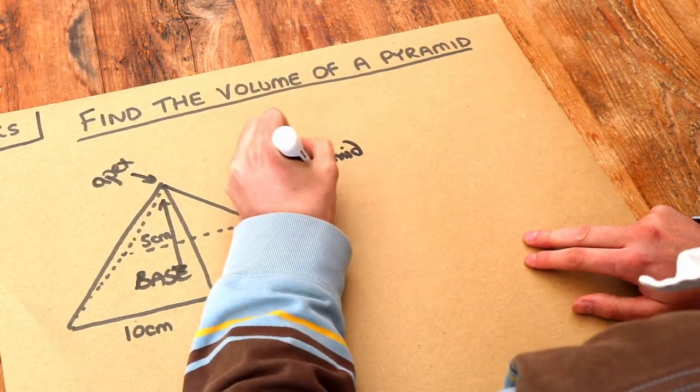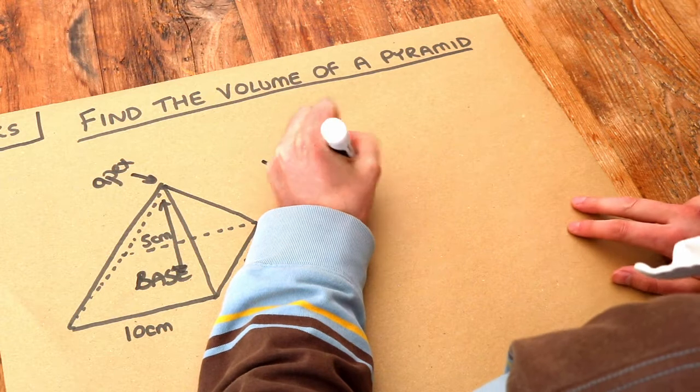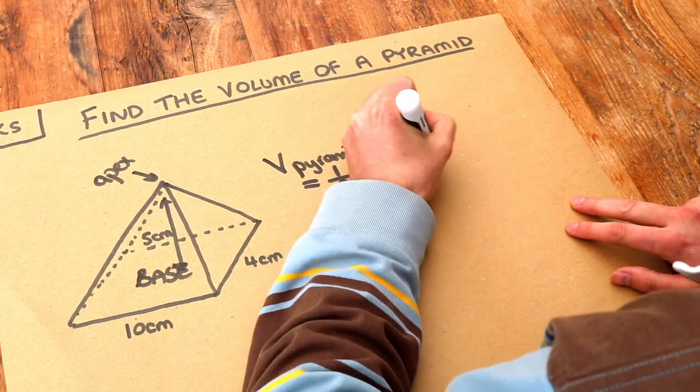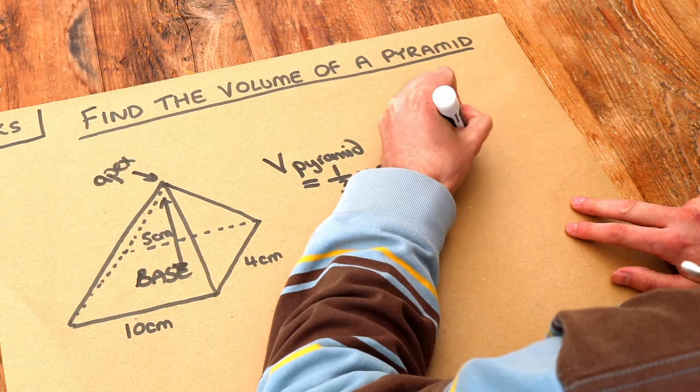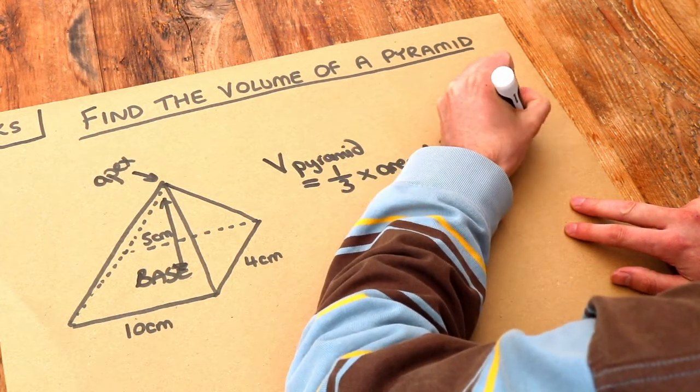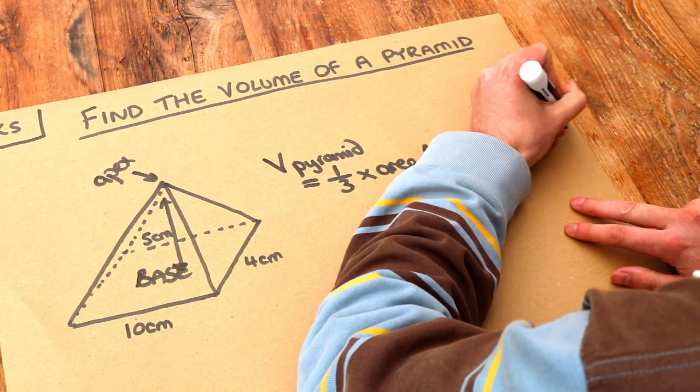Now the volume of a pyramid is just this: it's one third times the area of the base multiplied by the height. That's all you need to know for the purposes of this video.